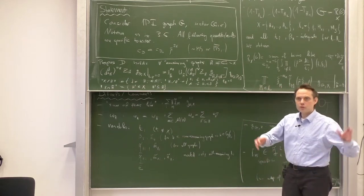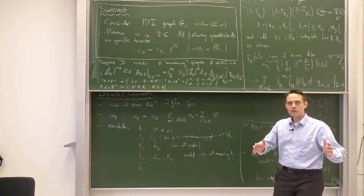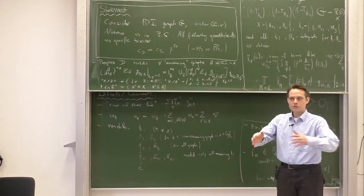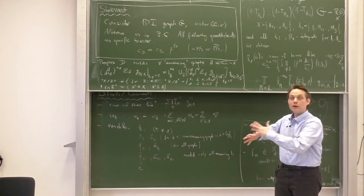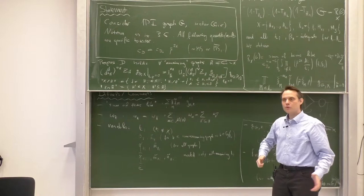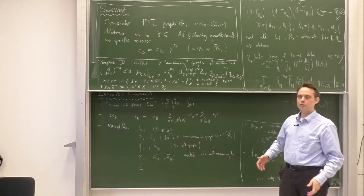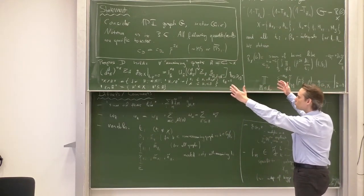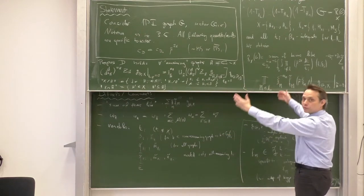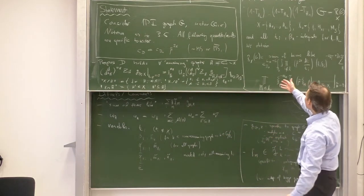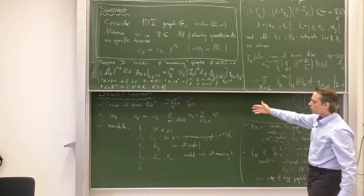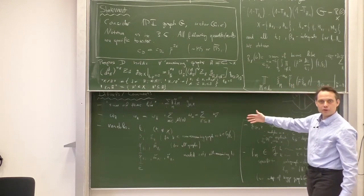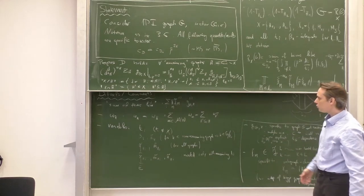The induction step consists of very precisely writing down our induction hypothesis, which is the same statement but for L minus 1, and then carrying out the integral from L minus 1 to L. We will need to prove at every stage all of what you see here: the functional form and all these properties of the functional form.